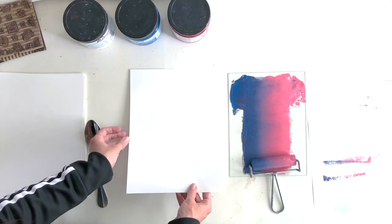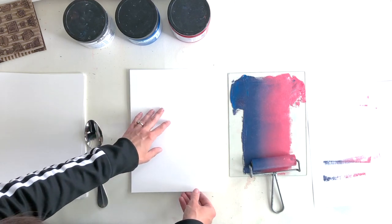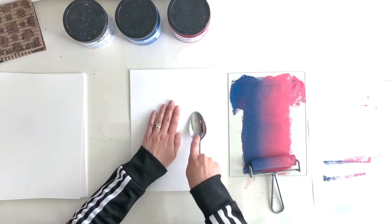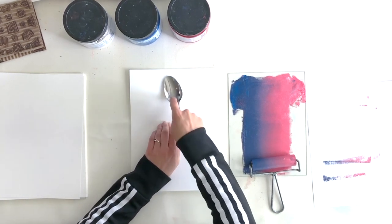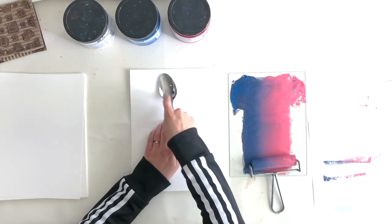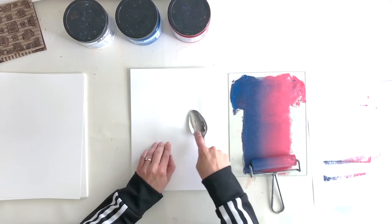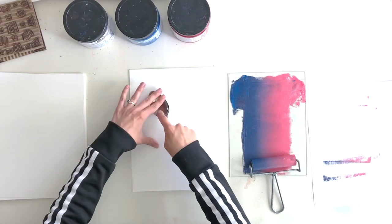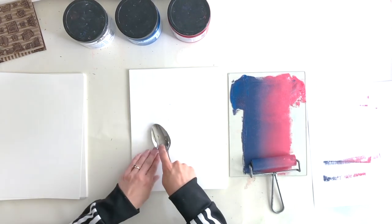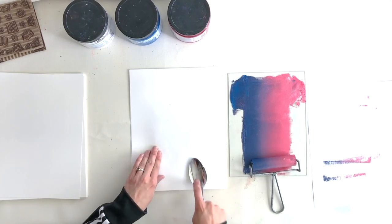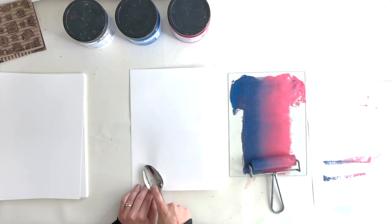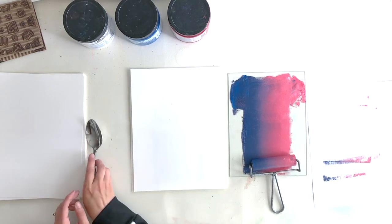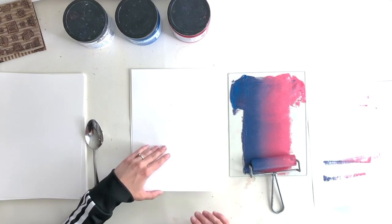Then I'll place my paper on top, lining the edges up with the registration template. And then I'll burnish it with a spoon for about 30 seconds or more. And then I'll carefully lift my paper up.